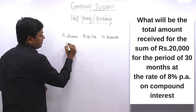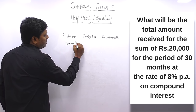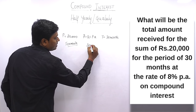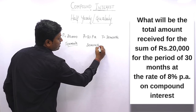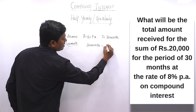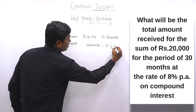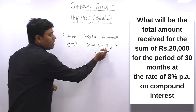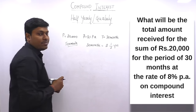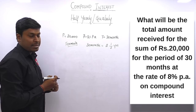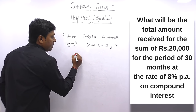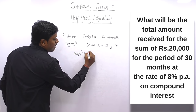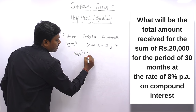Formula method: 30 months = 2½ years. A = P × (1 + r/100)^n × (1 + (r/2)/100)^(2n). Substituting: P = 20,000, r = 8, n = 2 for the first part, and n = ½ for the half-yearly part. So A = 20,000 × (108/100)² × (104/100)^1. After cancelling, this becomes 108 × 104 × 2.16.